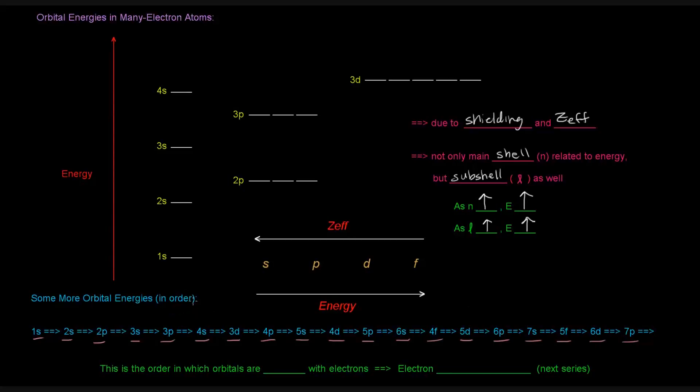So do we need to know this order? The answer is yes. Is this how we have to memorize it? Not exactly. There are ways to remember this, and we'll actually see more about that later, because this is the order in which the orbitals are actually filled with electrons. So that concept, that idea, that topic is called electron configurations, and that will be covered in the next series.